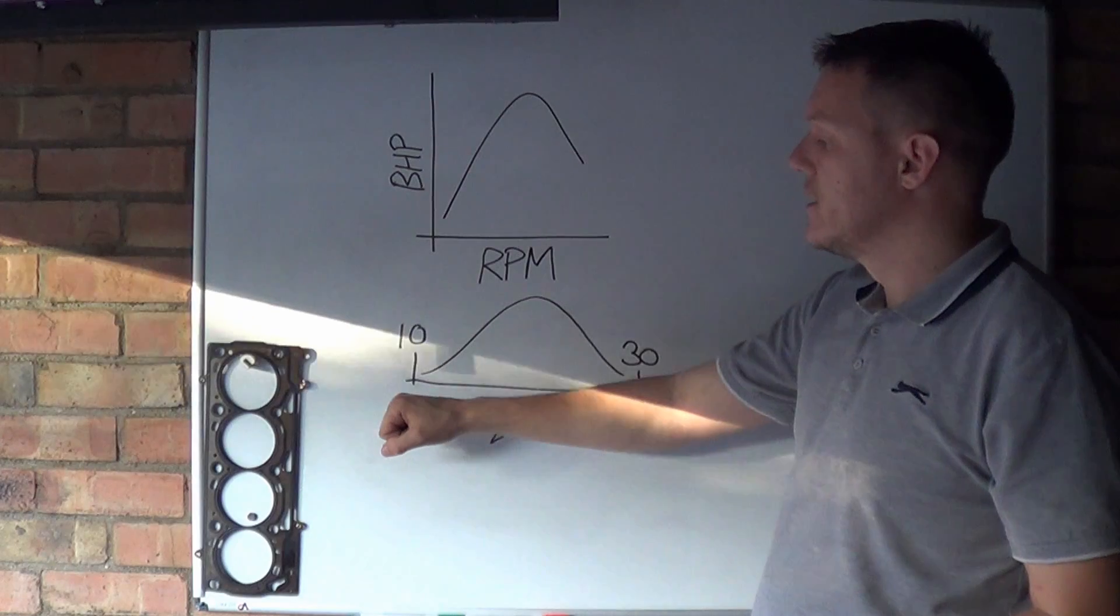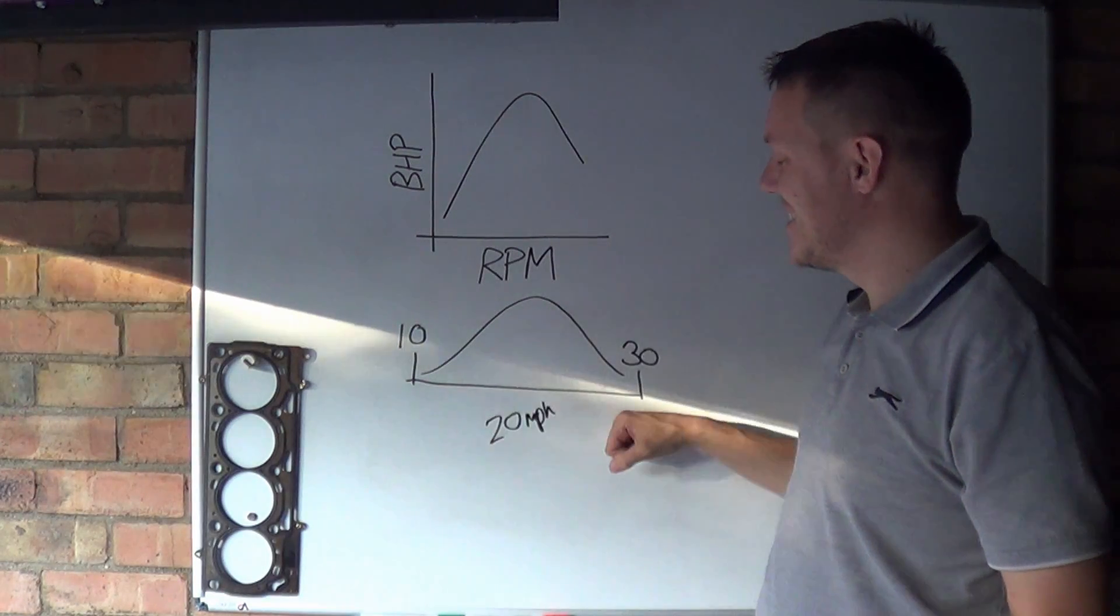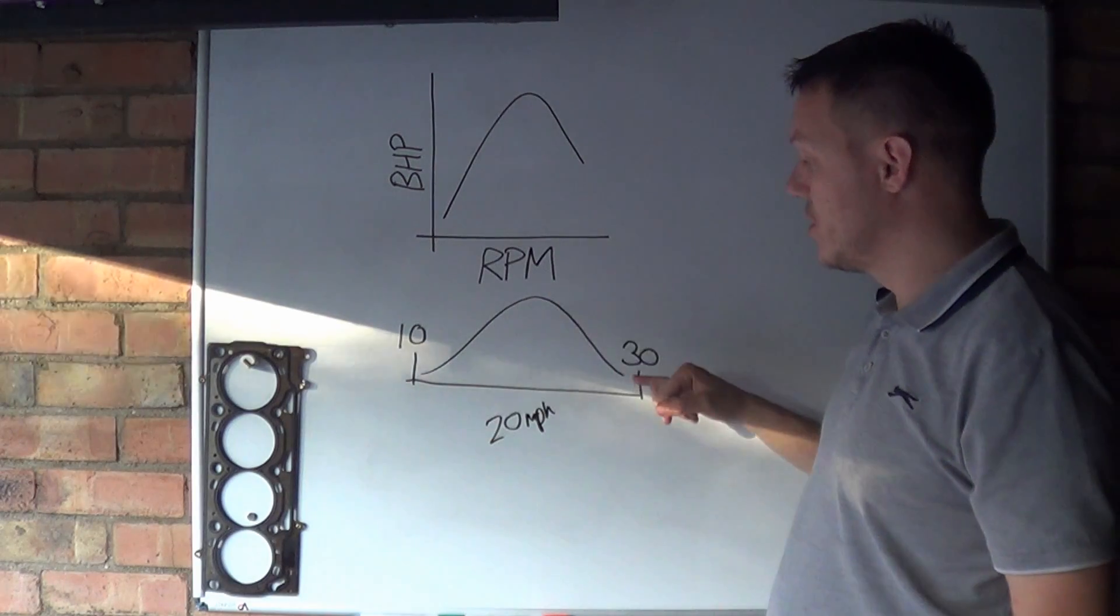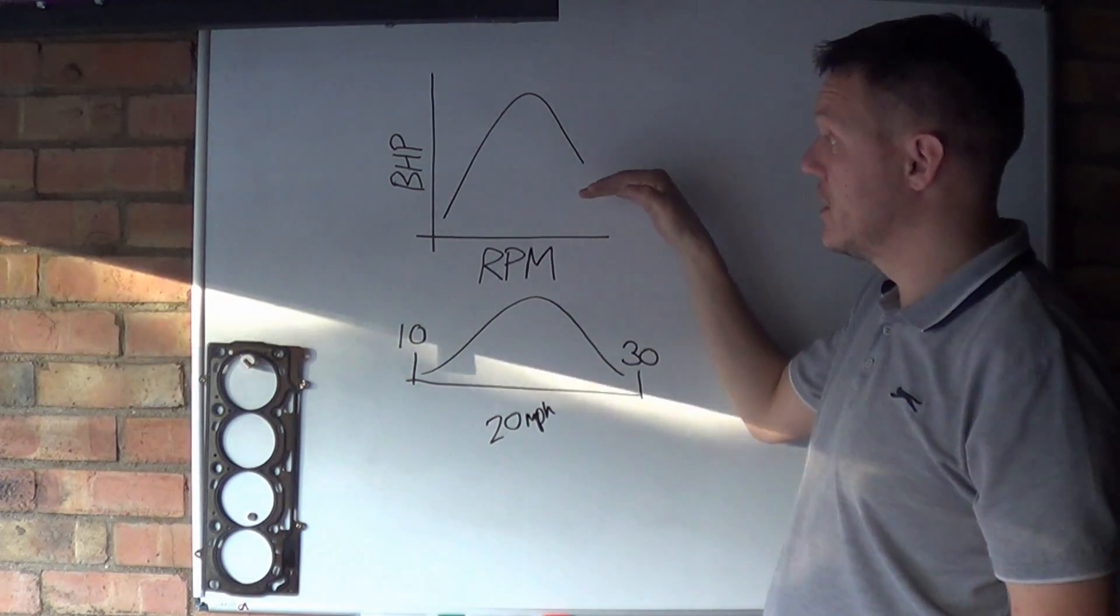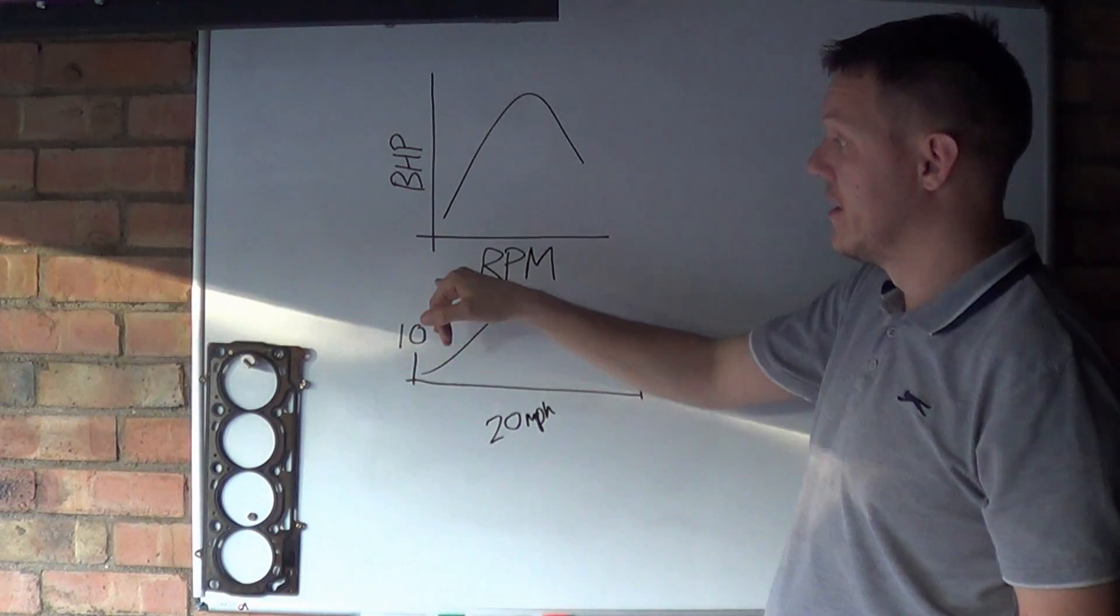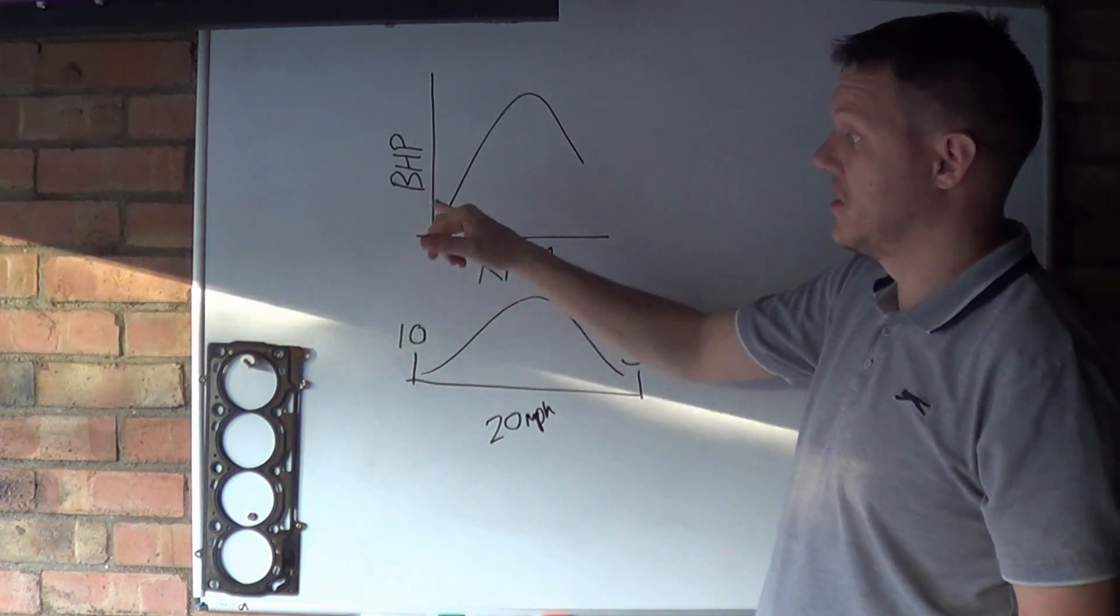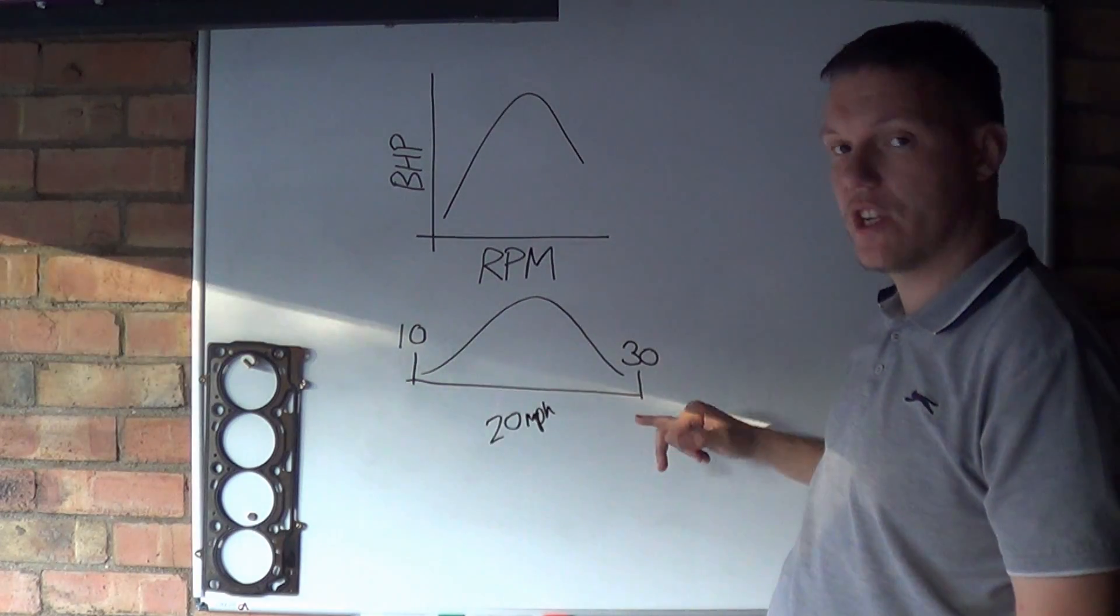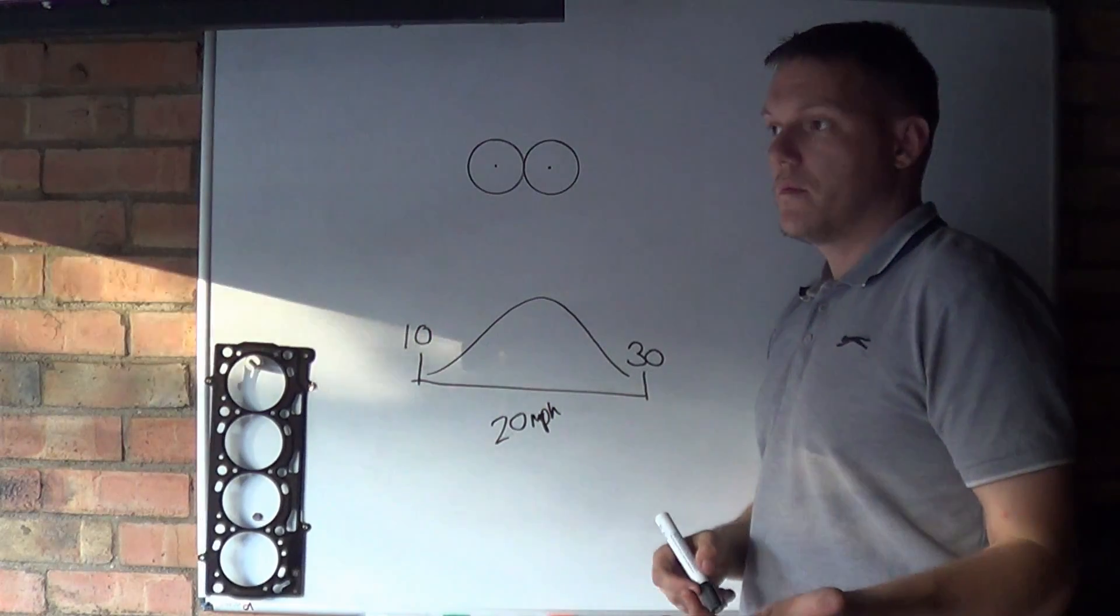From 10 to 30 miles an hour, a 20 mile an hour increase in speed, the engine can do that entire range with no gears included, just the engine running from a thousand RPM to let's just say 5,000 RPM. This is what it can do.